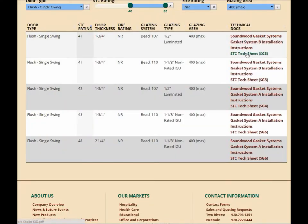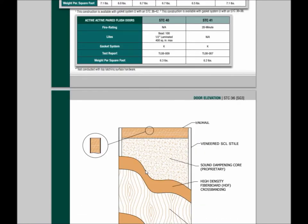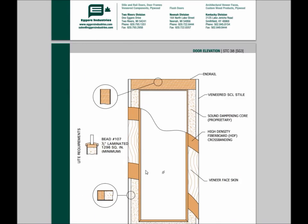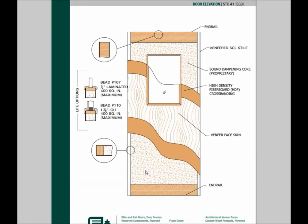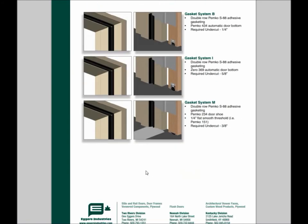Lastly is a newly created technical resource. Our STC spec sheets have been designed to be all-encompassing. We want you to have a simple process when it comes time to submit Eggers Soundwood acoustical products. This document begins with the principal benefits and features of this construction, then proceeds to provide detailed engineering specifications. You'll find that each STC rating has its own elevation, and we've included the gasket systems specific to this particular STC — along with your drawings and descriptions.